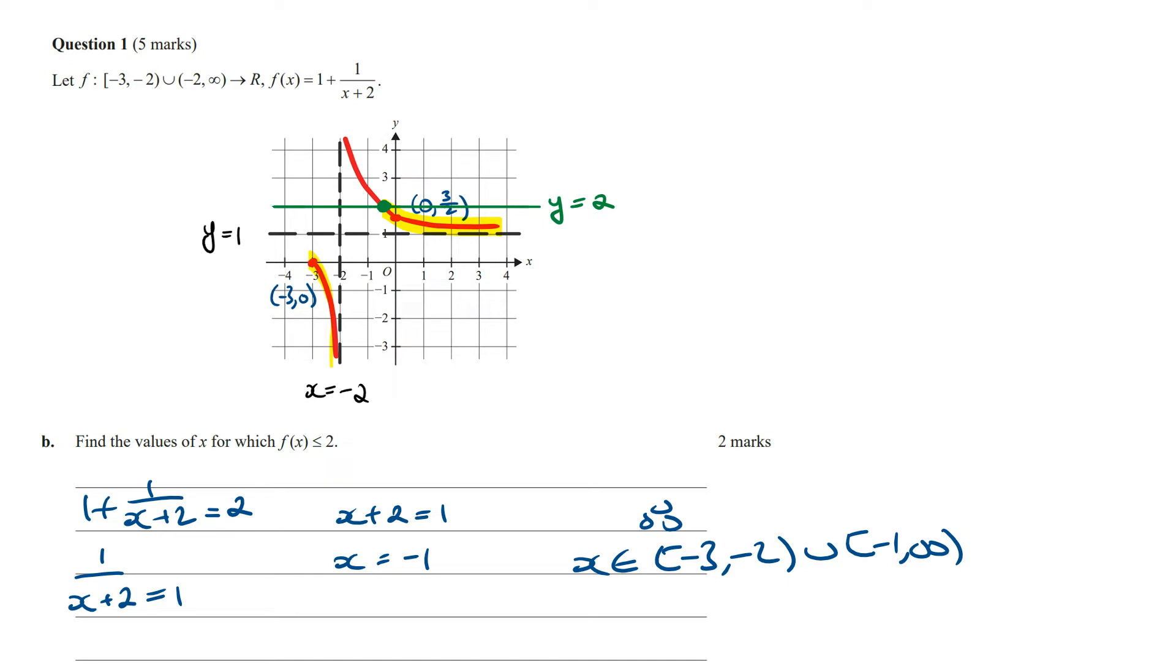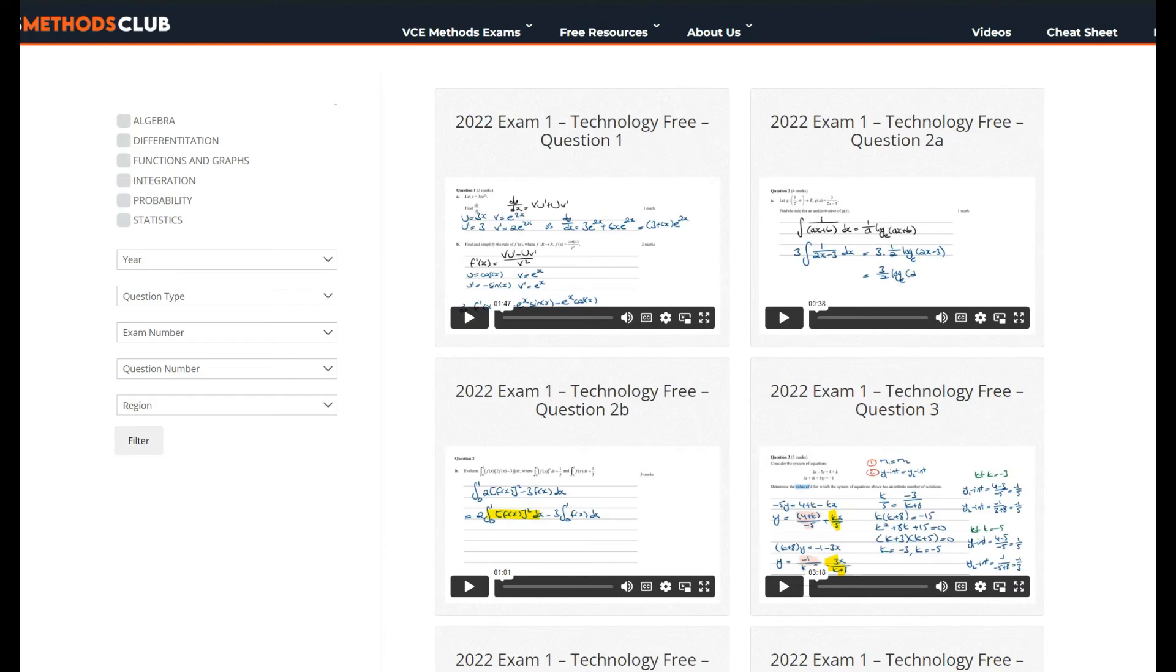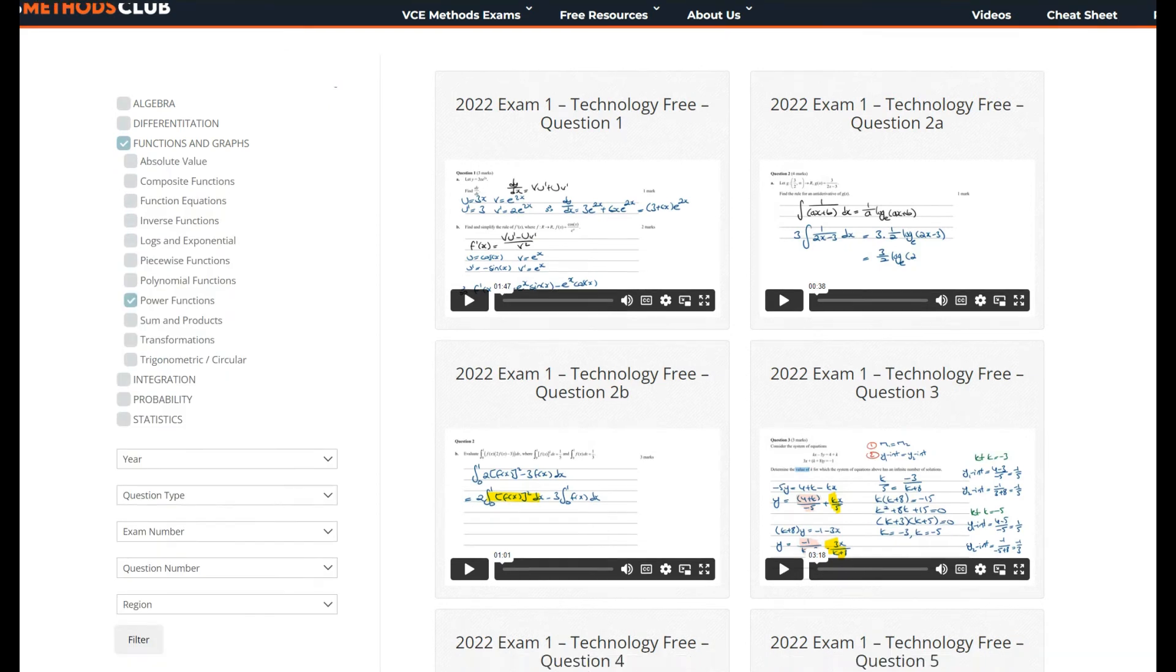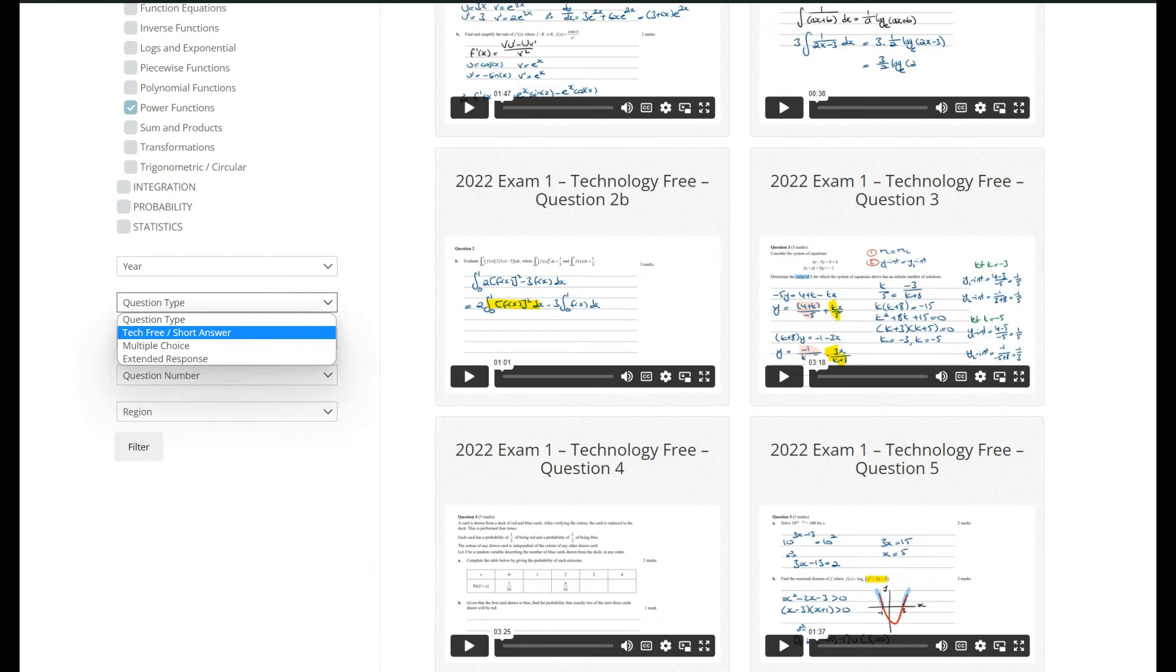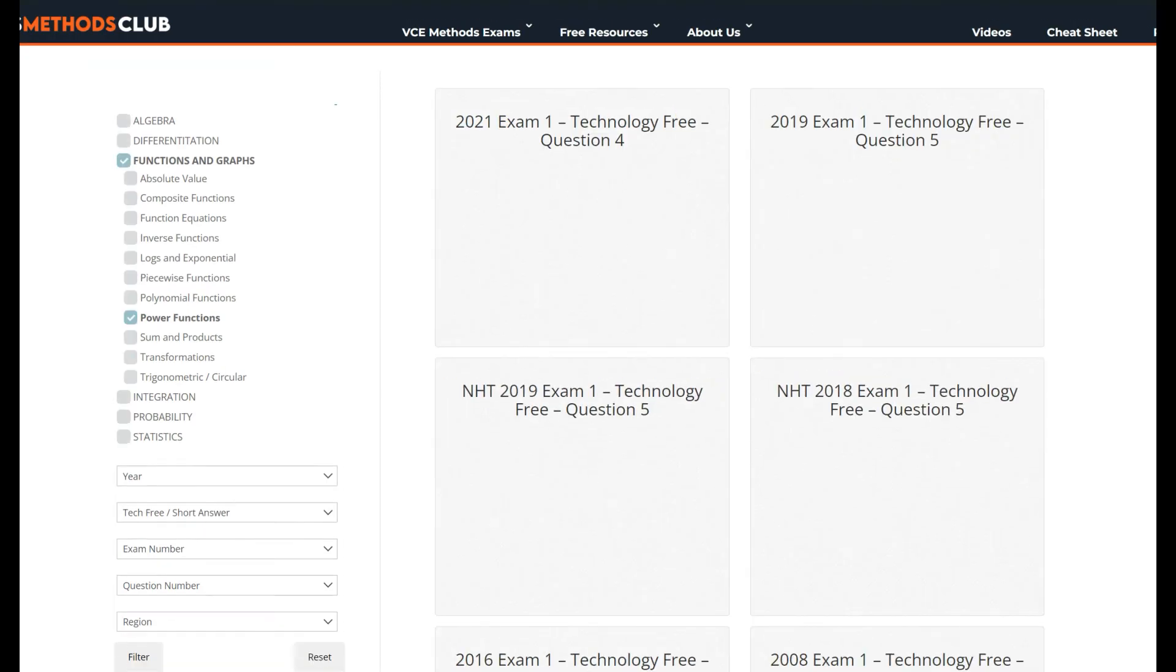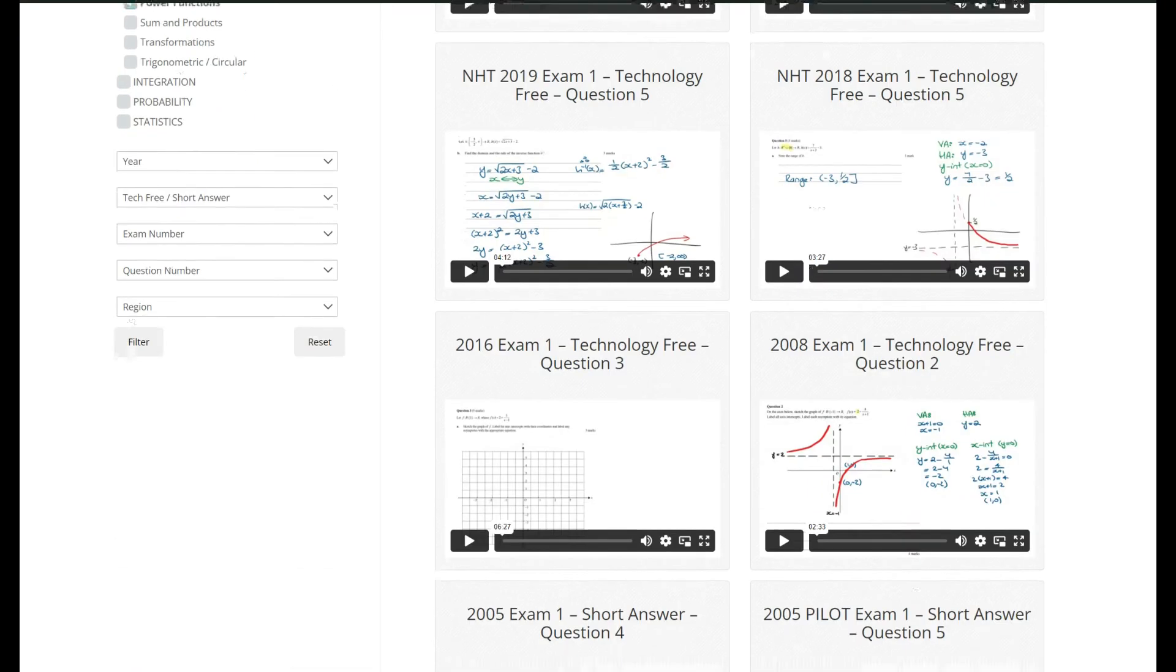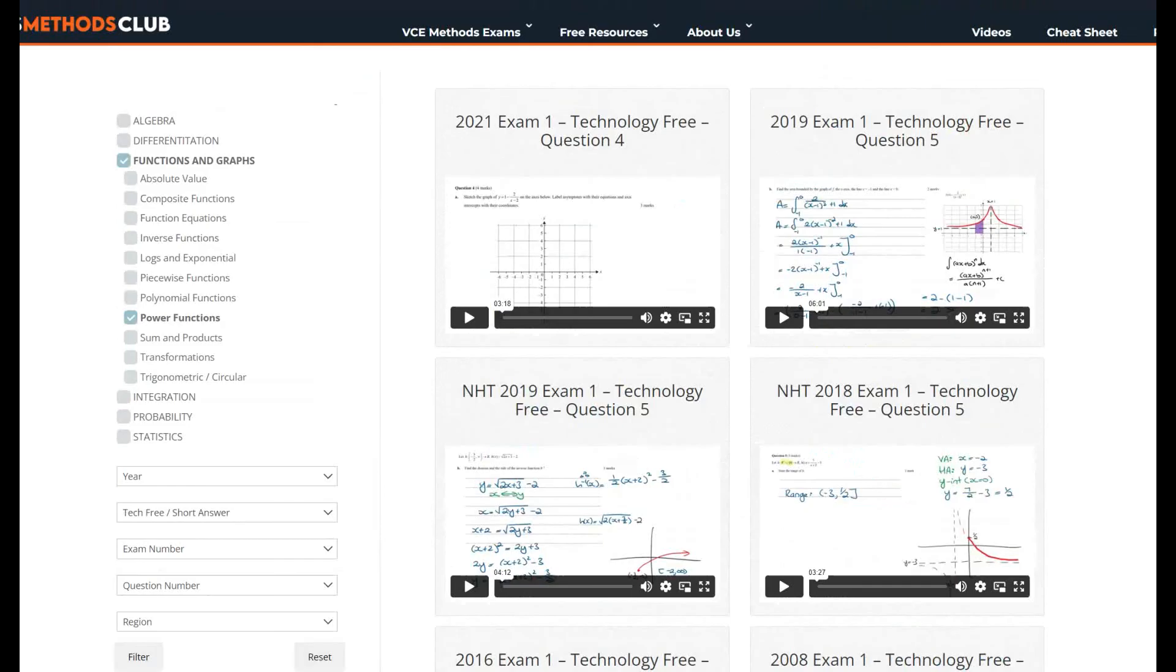Now if you want to practice or learn exam-style questions similar to this one, then join the Maths Methods Club where you can group past Maths Methods exam questions by topic. When you log in, click on Functions and Graphs from the main topics and then click on Power Functions from the subtopics. Go to Question Type and select Tech Free and then click on Filter. This is then going to instantly group all the past Maths Methods exam questions related to Power Functions. In Exam 1, go through these questions and see how you go. If you get stuck, you can just watch the video solutions. Good luck and I'll see you in the next video.